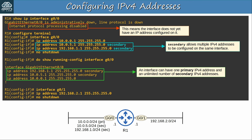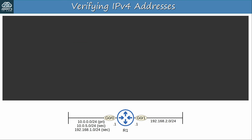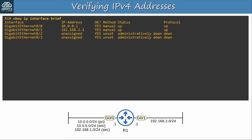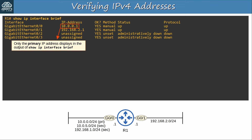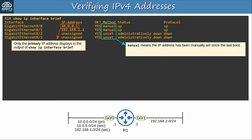Now let's look at a couple of SHOW commands to verify the IP addresses we configured. First up, SHOW IP INTERFACE BRIEF — a command you're very familiar with. Only the primary IP address displays in the output of SHOW IP INTERFACE BRIEF; secondary IP addresses are not shown. Looking at the METHOD column: MANUAL means the IP address has been manually configured since the last boot. UNSET means the IP address hasn't been configured and the router booted using a default configuration, not the startup config. When a router boots up for the first time, there is no startup config — it doesn't exist until you use a command like COPY RUNNING-CONFIG STARTUP-CONFIG.